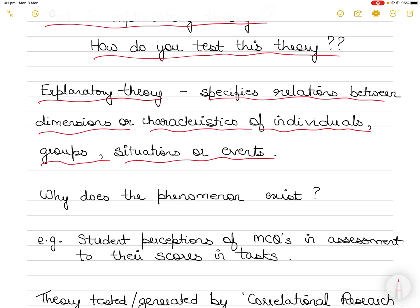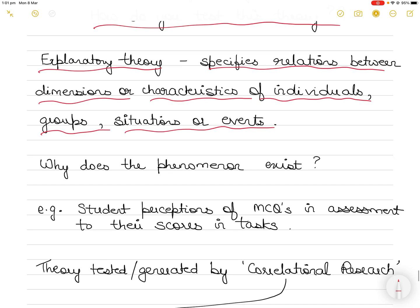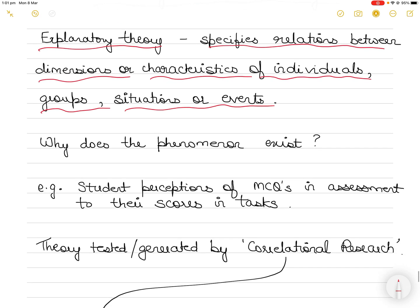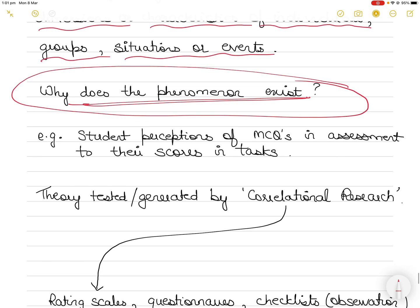So this theory comes in only once your descriptive theories have been generated and tested. You have already defined the parameters and terms. Now you are trying to explain the relationships between the characteristics and the phenomena. This basically explains why the phenomena exist, why a certain phenomena that you are trying to investigate exists.